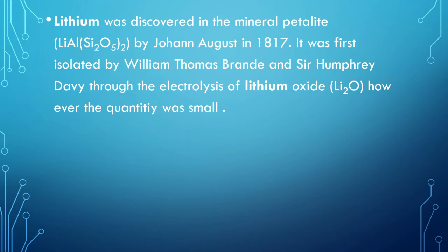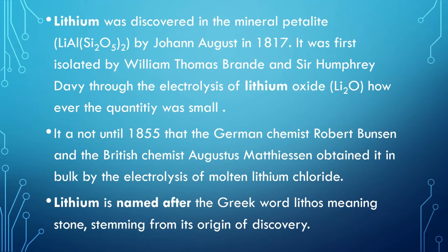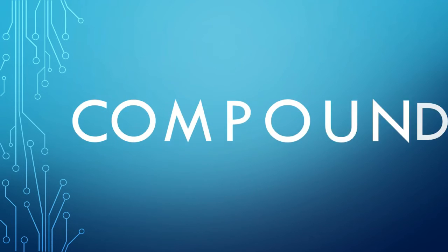Lithium was then isolated by William Thomas Brande and Sir Humphrey Davy through the electrolysis of lithium oxide; however, the quantity was small. It was not until 1855 that German chemist Robert Bunsen and British chemist Augustus Matthiessen obtained it in bulk by electrolysis of molten lithium chloride. Its name comes from the Greek word 'lithos' meaning stone, stemming from its discovery in the mineral petalite.